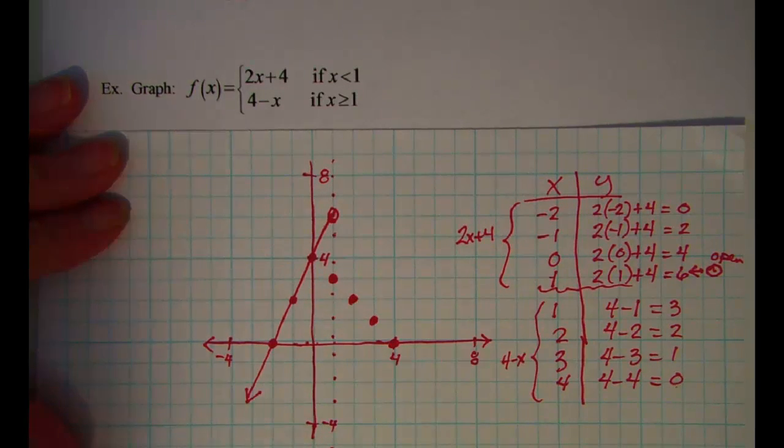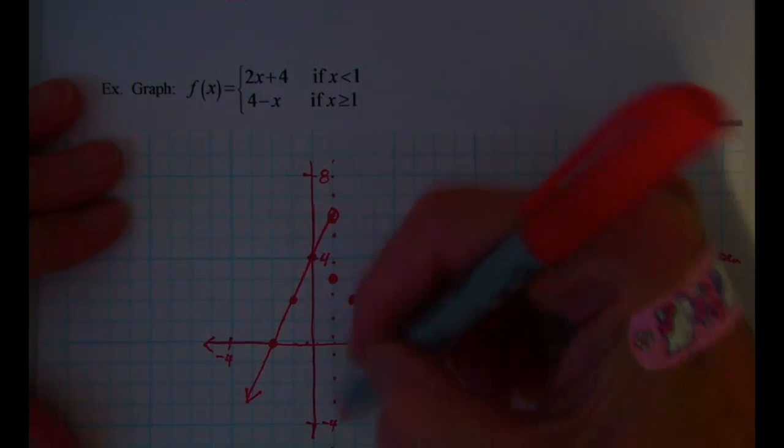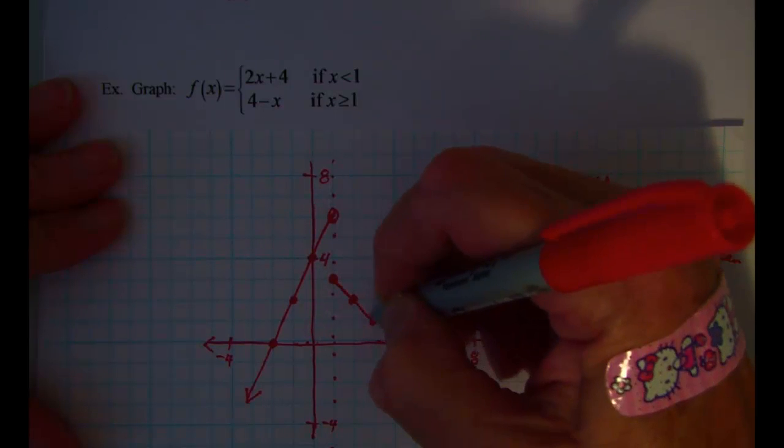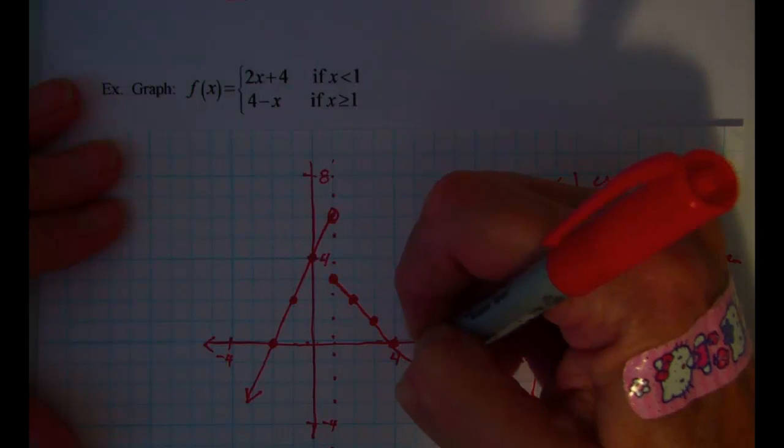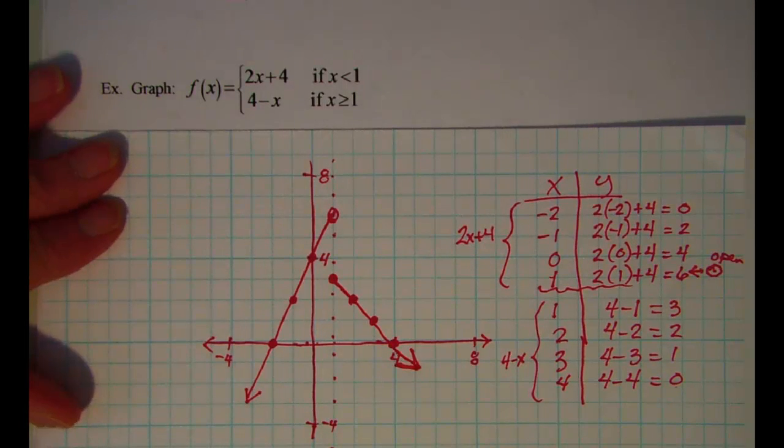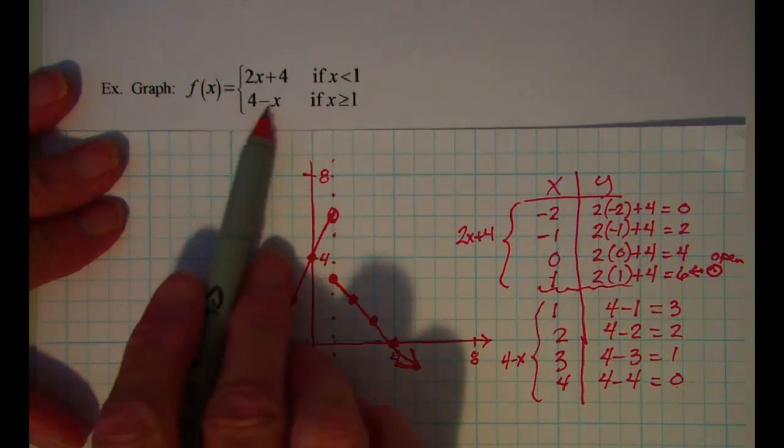So on this side of x equals 1, on this side of that barrier, I have a linear function with a negative slope. Keeps on going forever that way. And you can kind of check yourself again on this one. The rule here, the slope, the m value is negative 1.